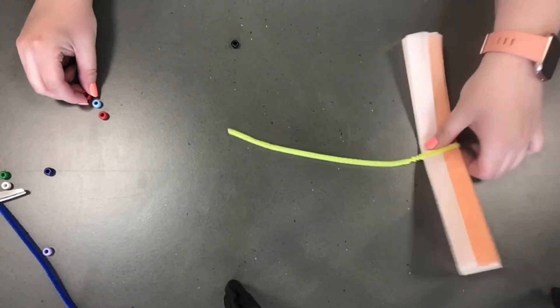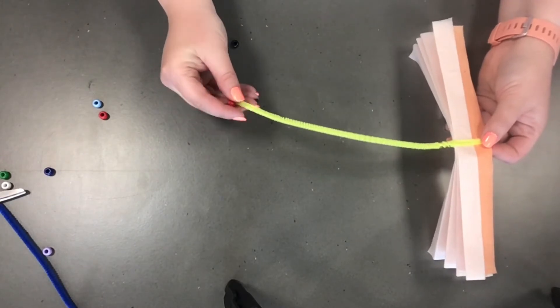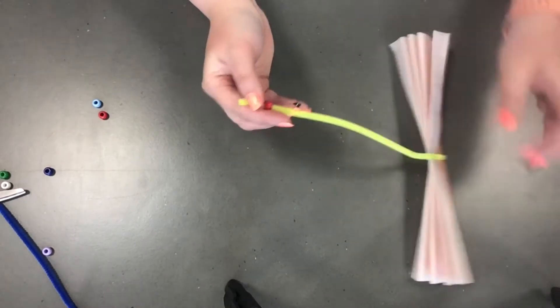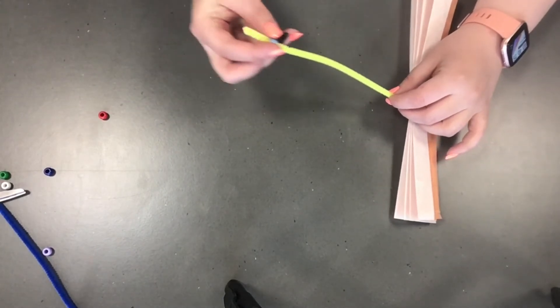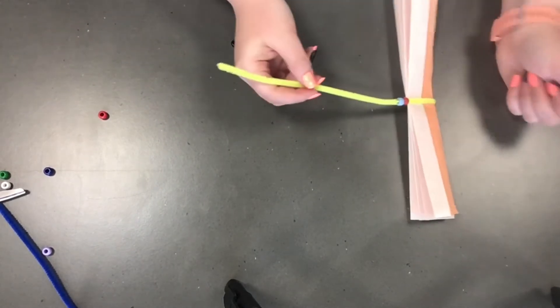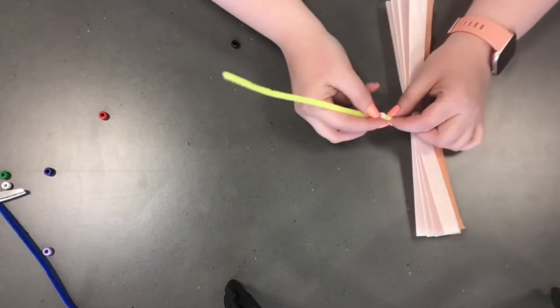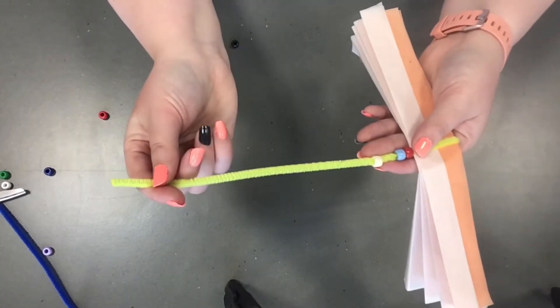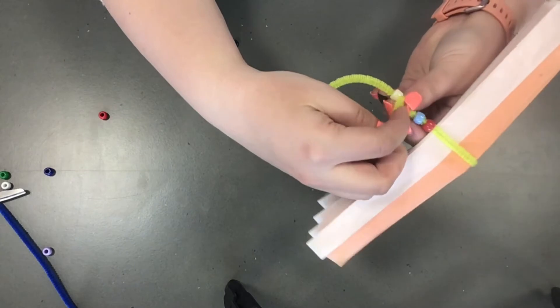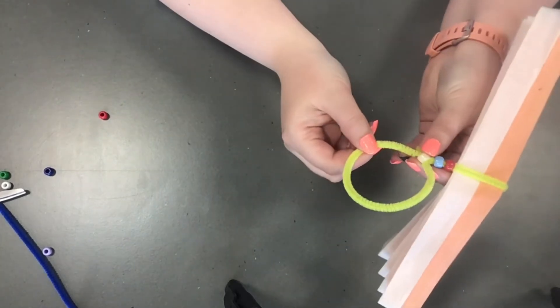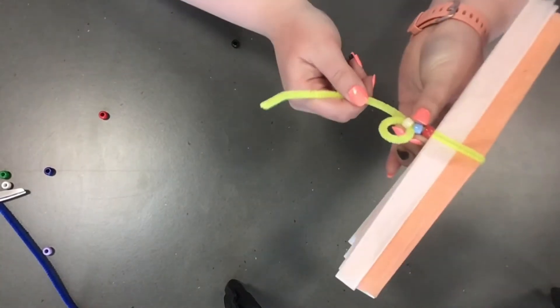So what you're going to do is you're going to take your beads and slide them all the way down your pipe cleaner and I'm going to use three. I think that's a good number. So once you have two on, slide your third one down all the way down and then you're going to take the end of your pipe cleaner and bring it around and tuck it through the bead. Make sure it's next to those other beads and just pull your pipe cleaner through like this.